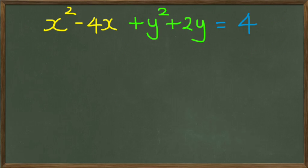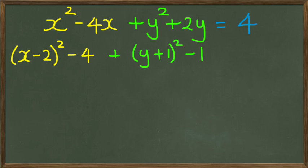this was what our original equation was and we figured out that x squared minus 4x could be written as x minus 2 squared minus 4 and our y squared plus 2y could be written as y plus 1 squared minus 1 and of course, all this is equal to 4.